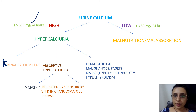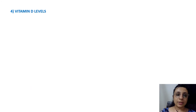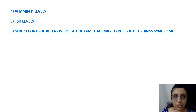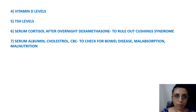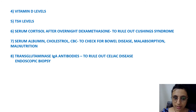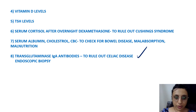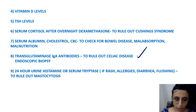Further tests include vitamin D levels, TSH levels, and cortisol levels to rule out Cushing syndrome. To rule out malabsorption, malnutrition, or bowel disease, ask for serum albumin, cholesterol, and CBC. For celiac disease, request transglutaminase IgA antibodies, and in doubtful cases, endoscopic biopsy can be performed.